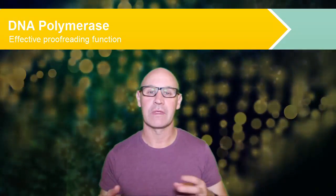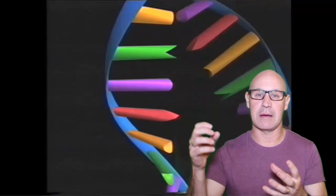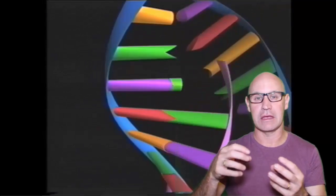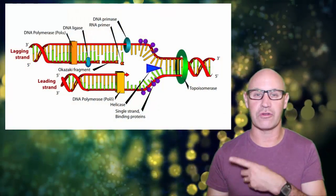Mutations or errors in DNA replication are very rare. And the reason for that is because of the proofreading function of DNA polymerase. So what it's looking for is mismatches in the complementary bases that have been put into place on the new strand of DNA.